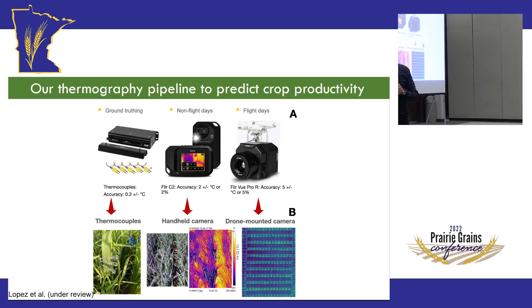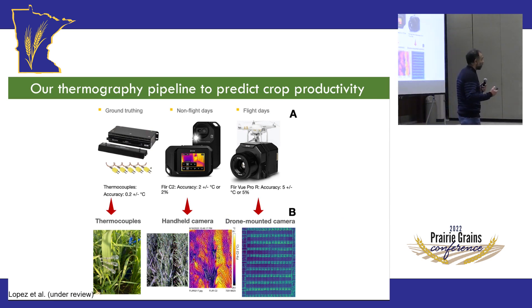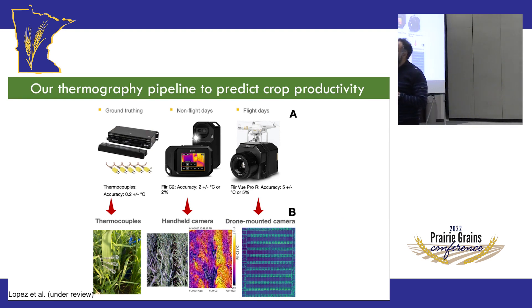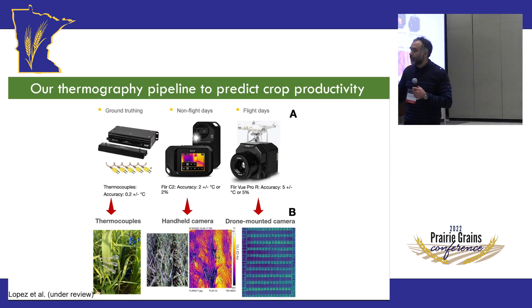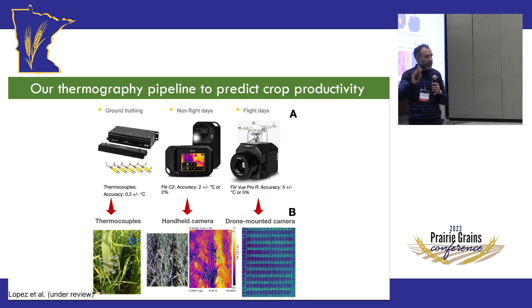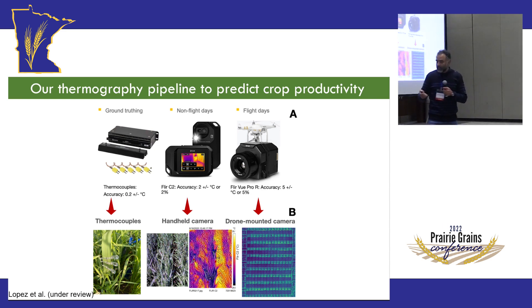To measure canopy temperature in a high-throughput way — because this is for breeding purposes and it's a numbers game — we devised a three-step approach. First, we needed to measure temperature exactly as sensed by the plant, so we deployed thermocouples: sensors you stick on the leaves that give you the temperature as sensed by the plant itself.